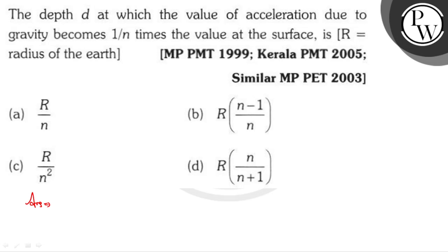So here, 1 upon n times. Which depth? The depth formula is G times (1 minus D by R).